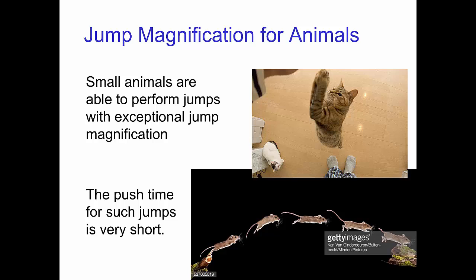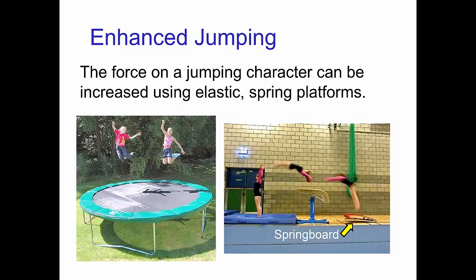Small animals are able to perform jumps with exceptional jump magnification, and the push time for such jumps is very short. Ordinary humans can perform exceptional jumps with the assistance of an elastic surface such as a trampoline or a springboard.